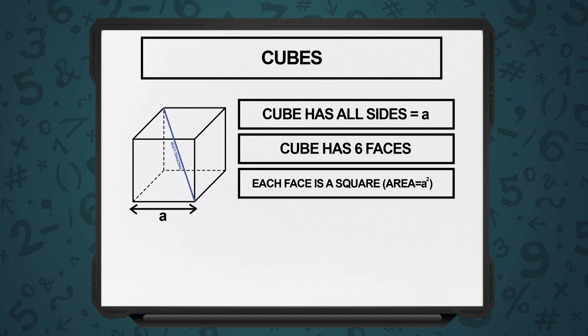Just like an ice cube. And in a cube, all the sides have the same length, which means every face is a square.